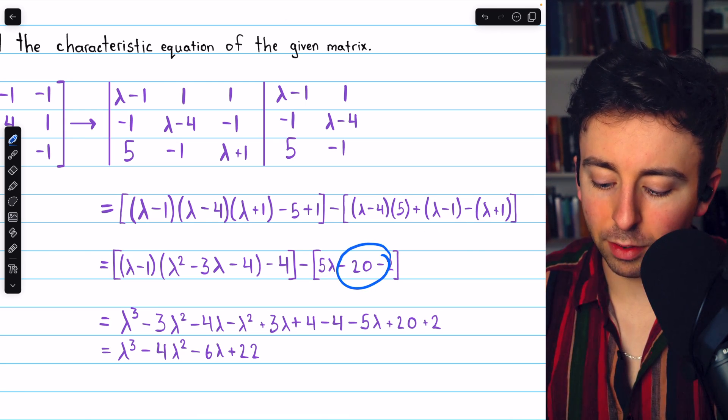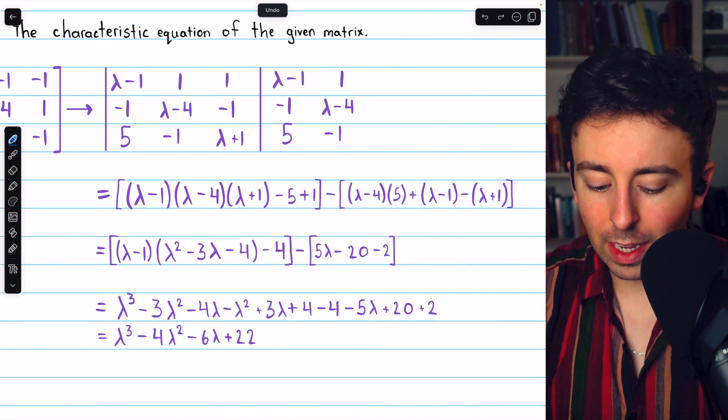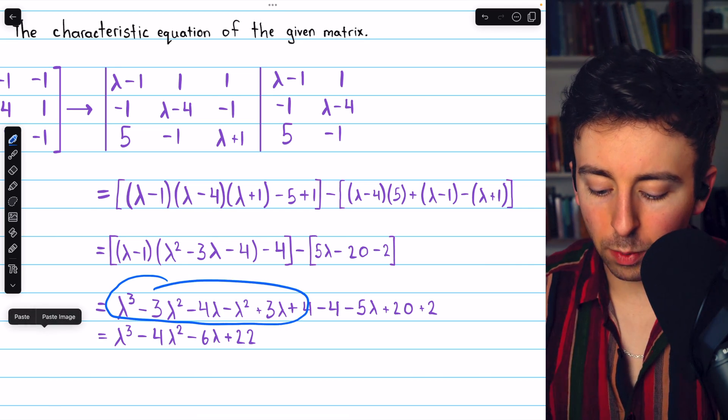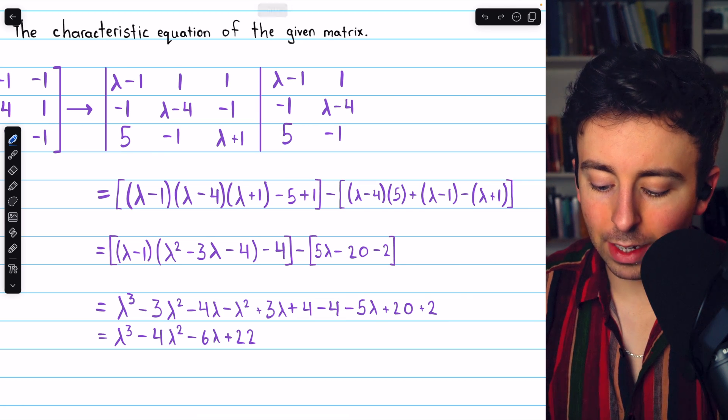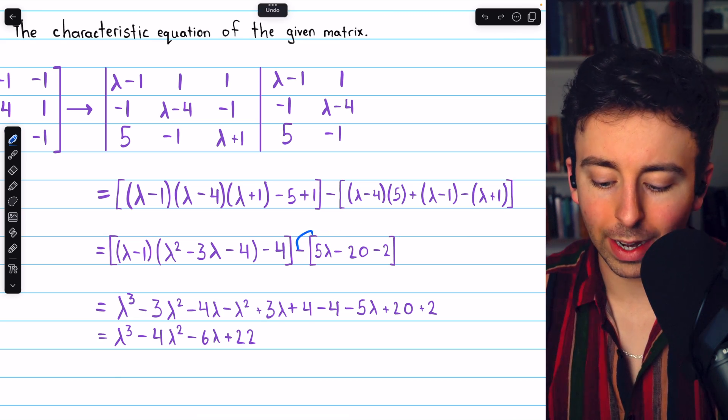And then of course we have minus 20 and minus 2. Multiplying lambda minus 1 times this quadratic gives us this cubic, which we will simplify. And then we still have the minus 4. And then minus 5 lambda and plus 20 and plus 2, distributing that negative through those brackets.